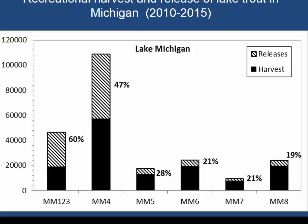The other lakes have lower release rates — Lake Superior has the lowest recreational release rates. This is a really important quantity because we're trying to determine what fraction of that released portion actually dies upon release.